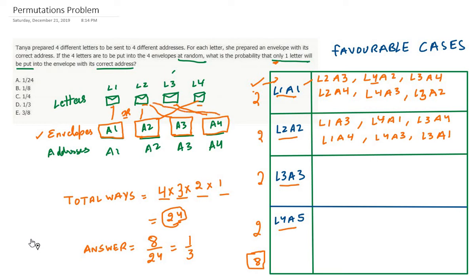In the second sub-case, if L2 goes to A4, then L4 can go to A2 or A3. But if L4 goes to A2, L3 would have to go to A3, which is its correct address — so instead L4 goes to A3 and L3 goes to A2. So all cases are covered. These are the two possibilities when L1 is going to its correct envelope A1.